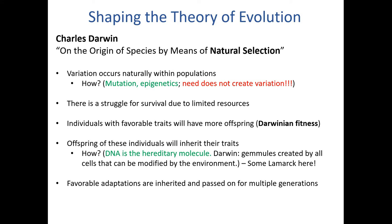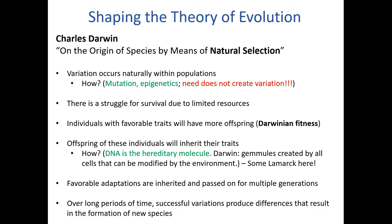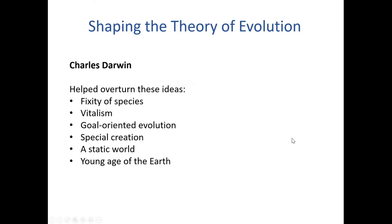Favorable adaptations that are inherited and passed on for multiple generations can be selected over time to produce differences that result in the formation of new species — the idea of evolution based on natural selection. Darwin ultimately helped overturn some of the prevailing ideas of the time, such as fixity of species, vitalism, goal-oriented evolution, special creation, a static world, and the young age of the earth. This was basically an example of a paradigm shift — we moved from creationist thinking into the idea of speciation through evolution.